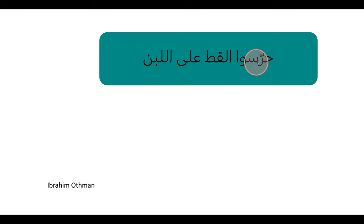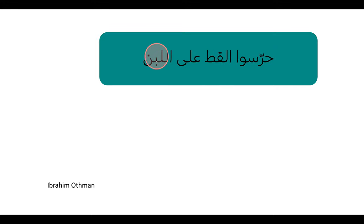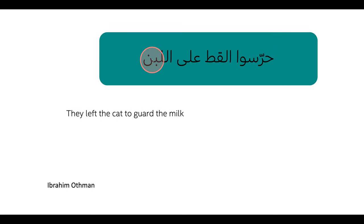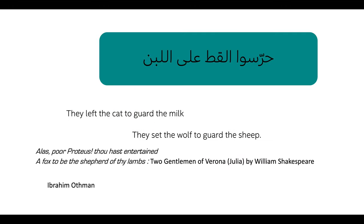Our second idiom is حرّسوا الأط على اللبن — sometimes they say الحليب. The literal translation means 'they left the cat to guard the milk,' and we have something similar in English: 'they set the wolf to guard the sheep.'